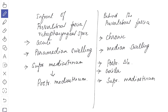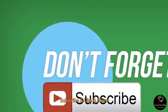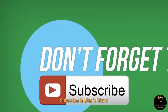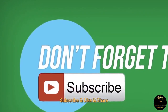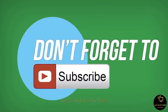Further descent behind the pre-vertebral fascia is limited by the fusion of the pre-vertebral fascia with the anterior longitudinal ligament of the upper three thoracic vertebrae.